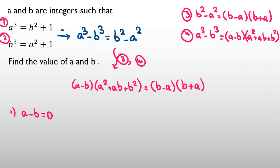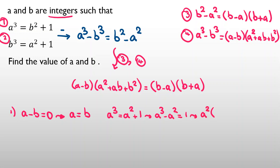If A minus B equals zero, then A equals B. The first equation becomes A cubed equals A squared plus one. Taking A squared to the left-hand side gives A squared times A minus one equals one. Since A is an integer, we need A squared times A minus one equals one, so the factor pairs are one times one, or negative one times negative one.